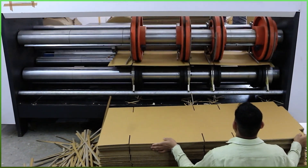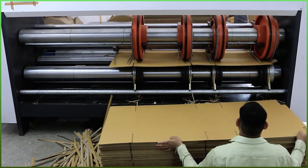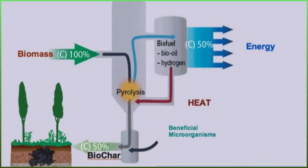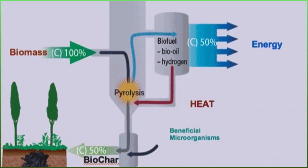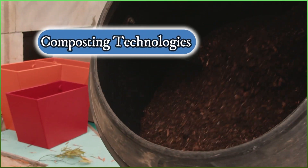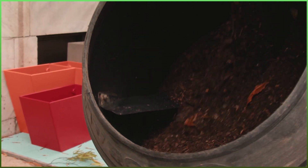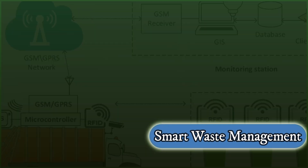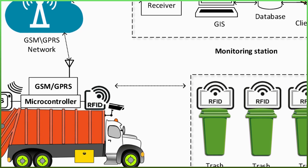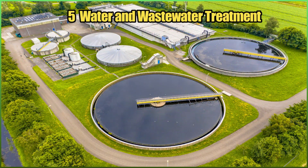Advanced recycling technologies are processes that can recycle a wider range of materials and produce higher-quality recycled products. Waste-to-energy facilities convert waste into usable energy through processes like incineration and pyrolysis. Composting technologies are systems for efficiently breaking down organic waste into valuable soil amendments. Smart waste management uses sensors and data analytics to optimize waste collection routes and improve recycling rates.